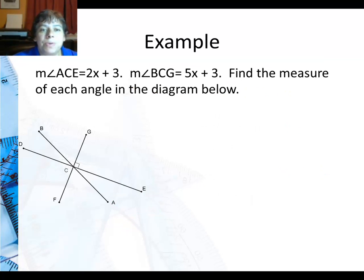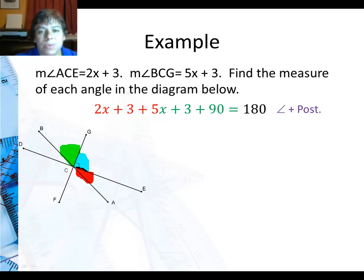In this example we have multiple angles here. So I'm going to kind of use really the angle addition postulate. But there's something interesting to note. First of all here's angle ACE which is 2x plus 3. There's angle BCG which is 5x plus 3. And then right there you see a 90 degree angle. All together they make a straight line. Which means all together they add up to 180. So 2x plus 3 plus 5x plus 3 plus 90 is 180.